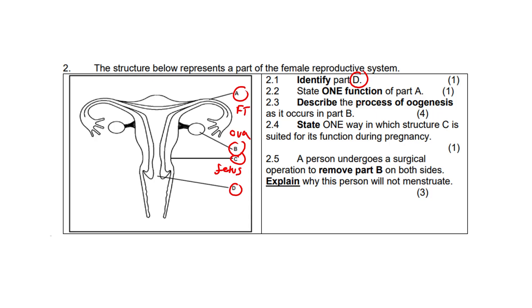Identify part D. The answer here is the cervix. State one function of part A, the fallopian tube. It's a site of fertilization as well as a passage for egg cells. There were two possible answers there. Describe the process of oogenesis as it occurs in part B.